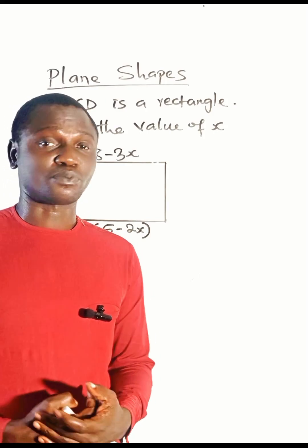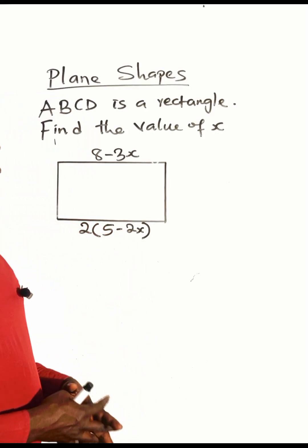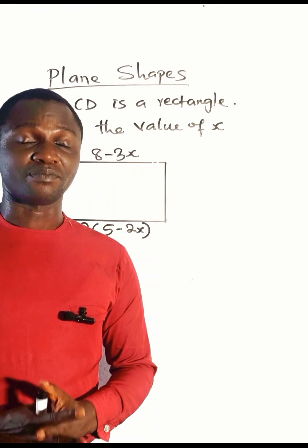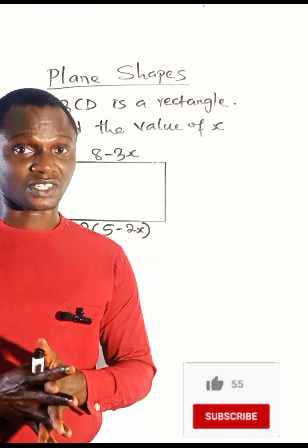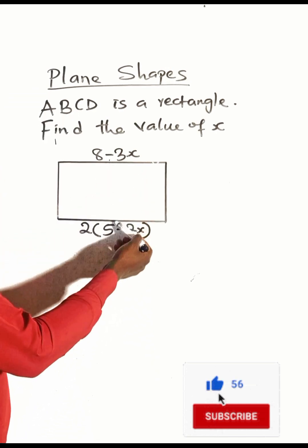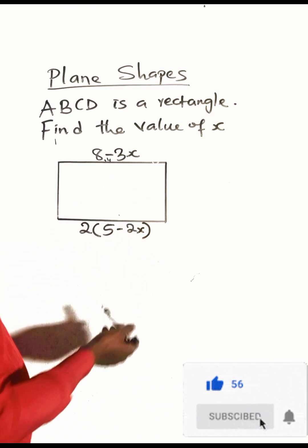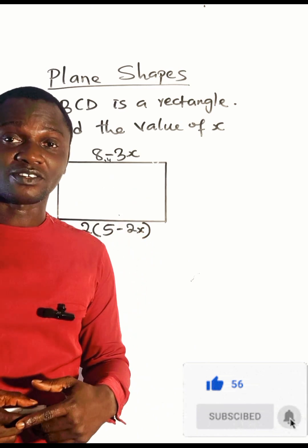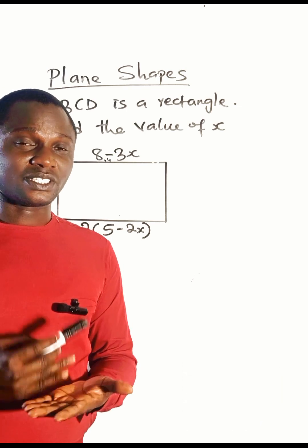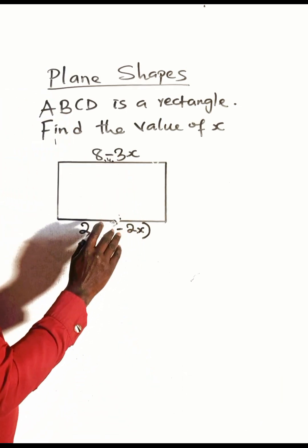Welcome back. Let's solve this problem. ABCD is a rectangle and we have to find the value of x. These two sides are the length of this rectangle. One of the properties of a rectangle is that opposite sides are equal — this side and this side are opposite and equal.